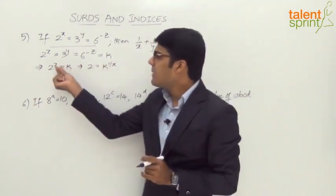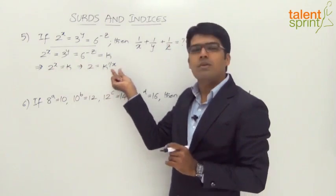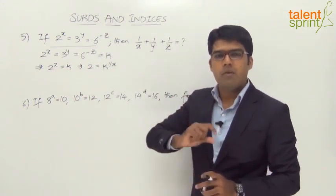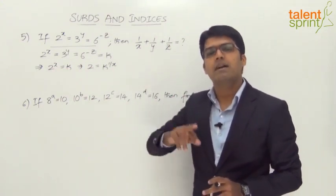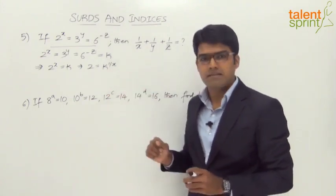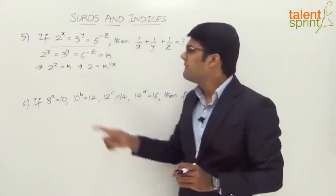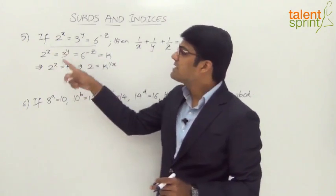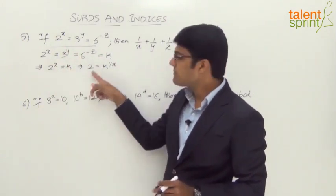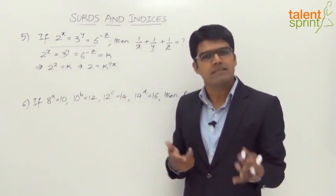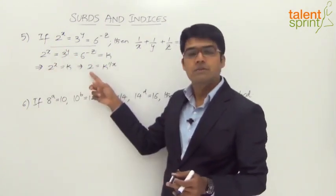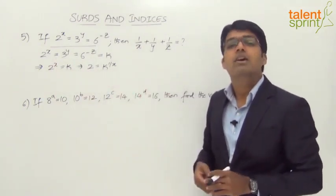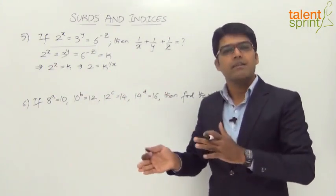The power x, when taken to the other side, becomes 1/x. That's a shortcut you can remember — any power taken to the other side becomes its reciprocal. So x becomes 1/x. The logic is we are taking the x-th root of both sides: the x-th root of 2^x equals 2, and the x-th root of k equals k^(1/x).